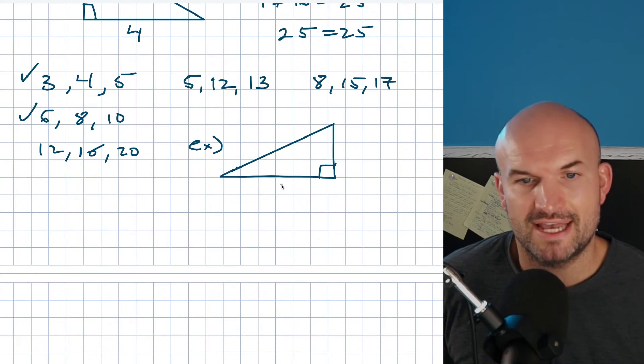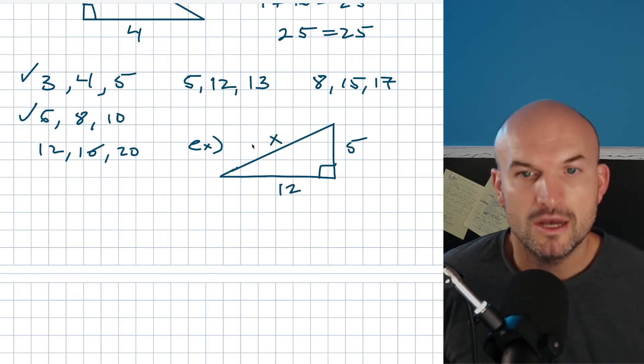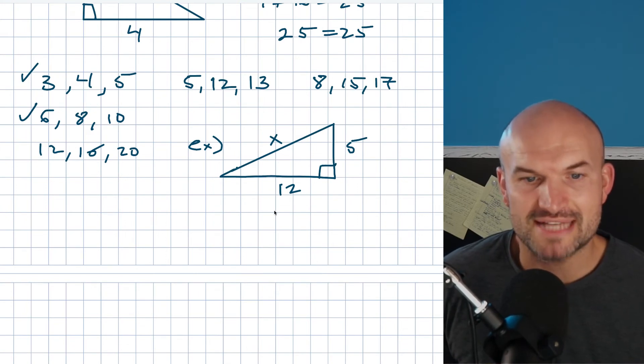Let's pretend I have a 5 over here and a 12 over here, and I say solve for X. You could go ahead and do the Pythagorean theorem, right? But maybe your math is a little off. Hopefully you recognize and say, 'Hey, this is a Pythagorean triple: 5, 12, the hypotenuse has to be 13.' So X equals 13.